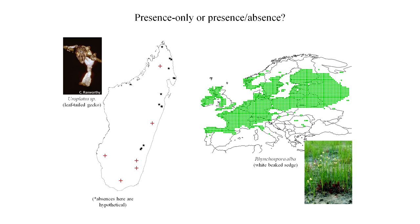With the white-beaked sedge data set, you get to see the main range margins, so you'll immediately be thinking about what variables control the northern and southern distributions. In that particular data set we only really have presence records, but some publications using this data set have used presence-absence methods because in a landscape like this, with a data set like this, it's pretty reliable that the species hasn't actually been found in some areas. So people will often make the assumption that the species is absent.